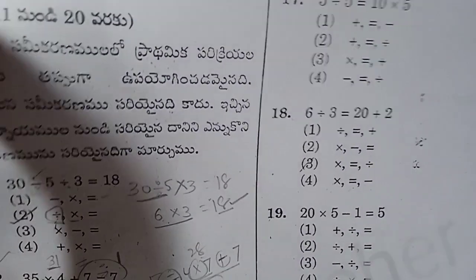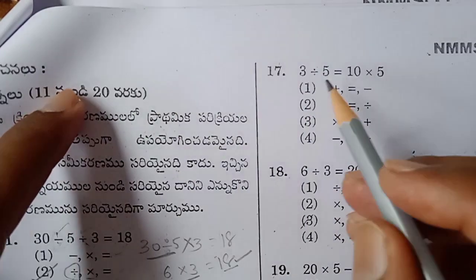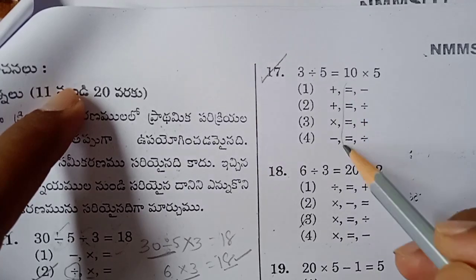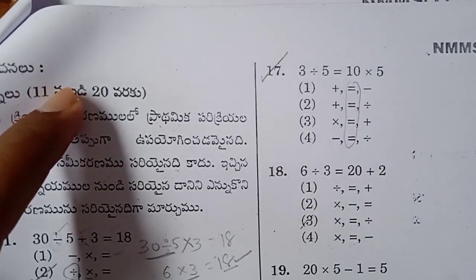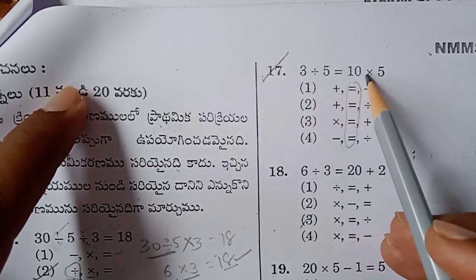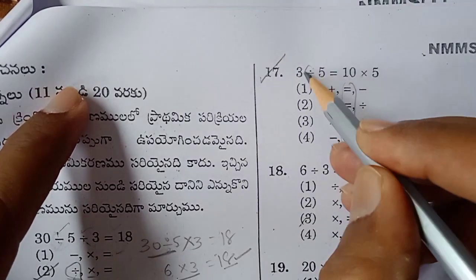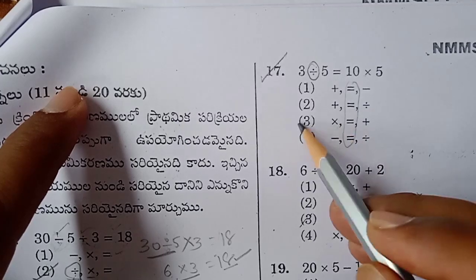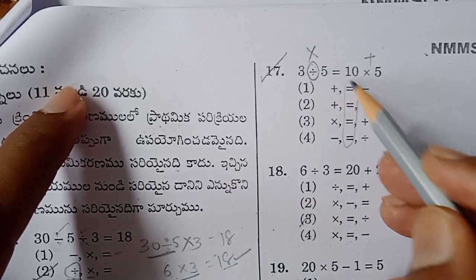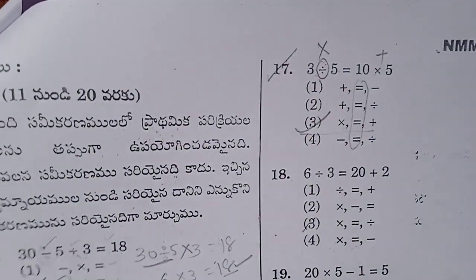Now move on to question number 17: divided by equals into — the second place has equals. As it is, replace it. 20 — here divided by into is present. Maybe here we replace into: first place into. 3 fives are 15. Here 10 plus 5 equals 15 — that matches. Option 3 is the right answer for question number 17.